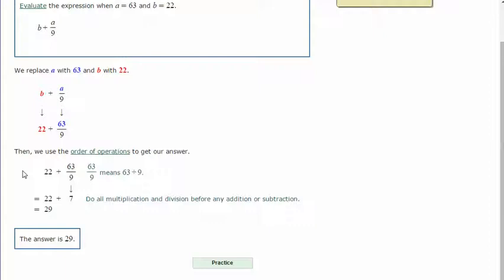Our order of operations tells us that we need to do the division first, and this fraction is the same as dividing. 63 over 9 is the same as 63 divided by 9, which is 7. Then we do the addition last. 22 plus 7 is 29.